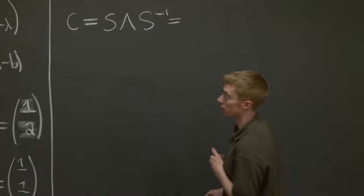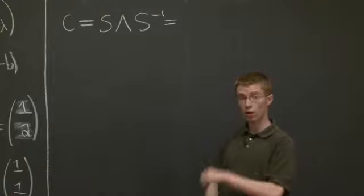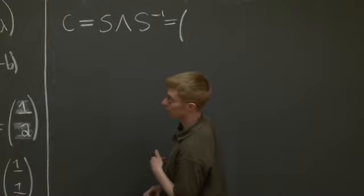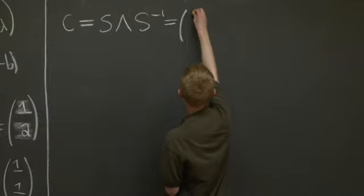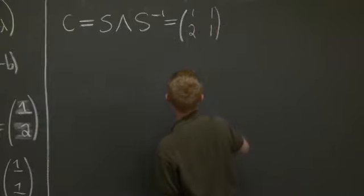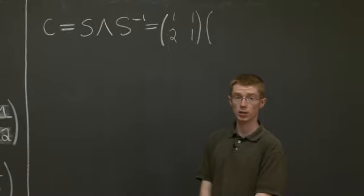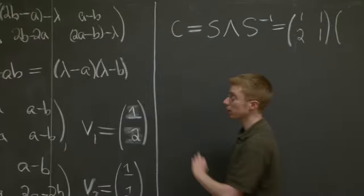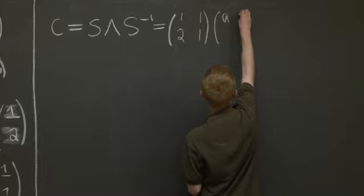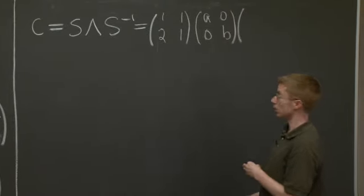So this is just what is S. Remember, S is our matrix of eigenvectors. So S is the matrix 1, 2, 1, 1. Now what is lambda? Lambda is the matrix of eigenvalues, right? So it's just A and B. Those are the diagonal entries of my lambda matrix. And then we just find S inverse.